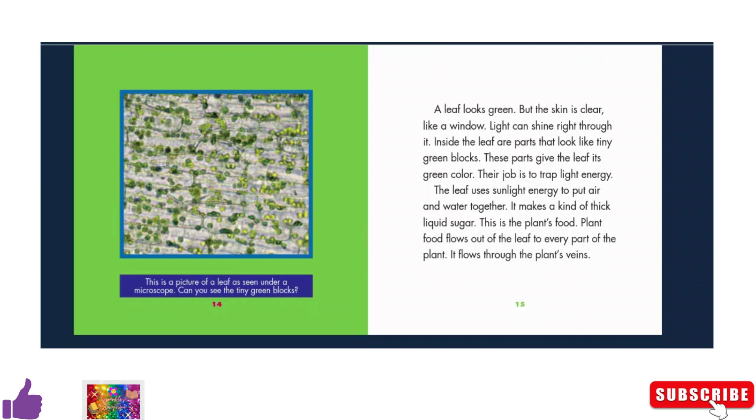Light can shine right through it. Inside the leaf are parts that look like tiny green blocks. These parts give the leaf its green color. Their job is to trap light energy.